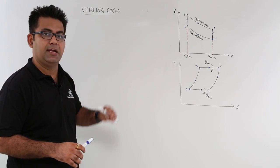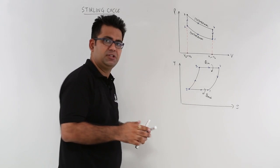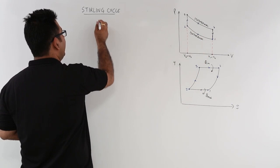Now after Carnot gas cycle, let us have a look at the Stirling gas cycle. In Stirling gas cycle, we have two isothermal processes and two isochoric processes.